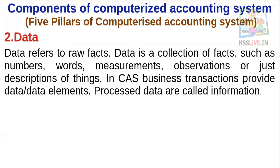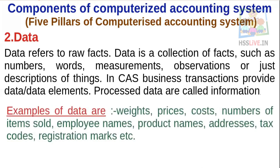Number two: Data. Data refers to all raw facts and raw material. Once raw facts are processed, they become information. Data is a collection of things such as numbers, words, measurements, observations, or just descriptions of things. In computerized accounting, business transactions provide data or data elements; when processed, that data becomes called information.